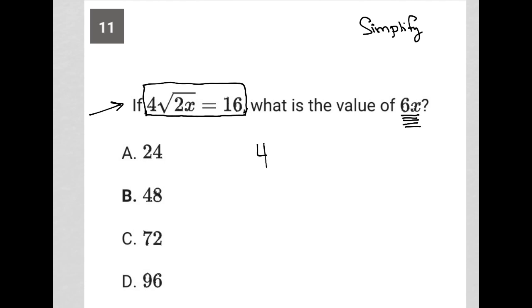So let's take what's been provided: 4 square root 2x is equal to 16. Let's simplify this. I'm going to simplify it by dividing both sides by 4. The 4s therefore cancel. I'm left with the square root of 2x is equal to 4. I can then square both sides here, leaving me with 2x is equal to 16.